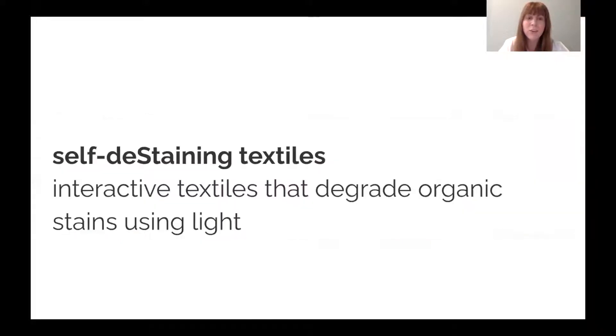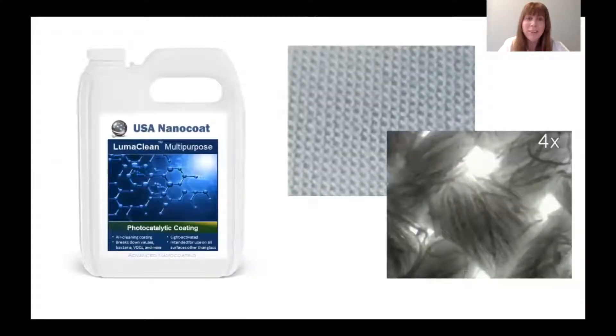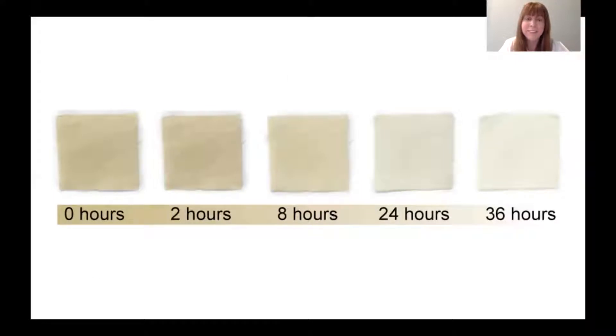We thus introduce self-destaining textiles, which are interactive textiles that degrade organic stains using light. Our self-destaining textile works by applying a photocatalytic coating to the surface of the textile that, when exposed to light, degrades stains.